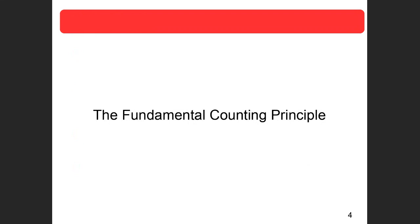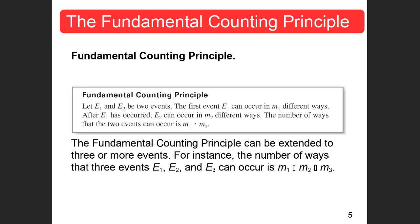The fundamental counting principle says that let E1 and E2 be two events. The first event, E1, can occur in m different ways. After E1 has occurred, E2 can occur in m2 different ways. The number of ways that the two events can occur is m1 times m2.